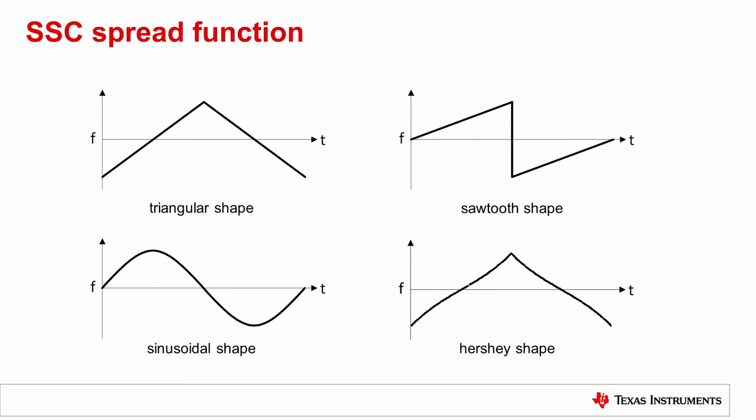However, the implementation is a little bit more complex compared to the common triangular shape. Replacing these linear ramps with a pseudo-random frequency pattern is another recent technique to provide additional EMI reduction.